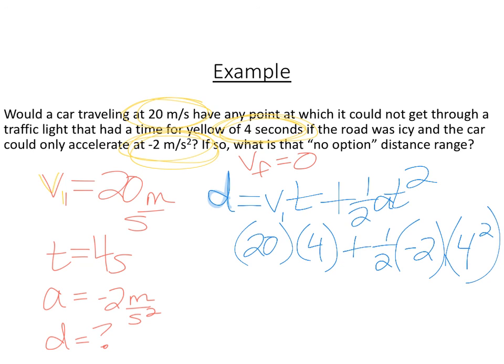Now we're going to just do a little bit of mathematical solving here. 20 times 4, that's going to give us 80. And then over here, we're going to end up with 4 squared, which is 16 times negative 2, which is negative 32, times 1 half is going to be negative 16. And then we have 80 minus 16, so our distance is 64 meters. So we've got to be at least within 64 meters or we're going to run that red light.